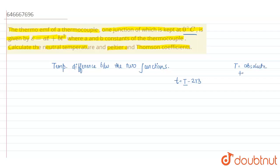So this is the t here. Now, thermo emf is equal to a into t minus 273 plus b into t minus 273 whole square.